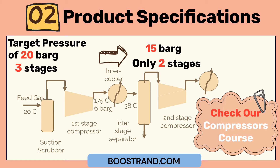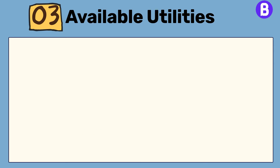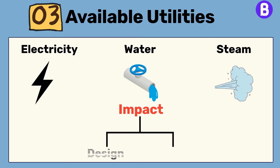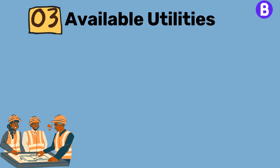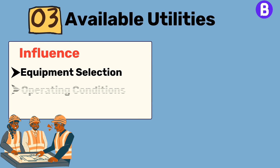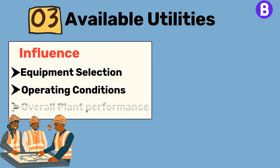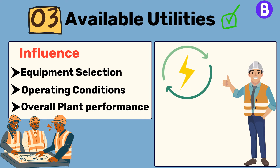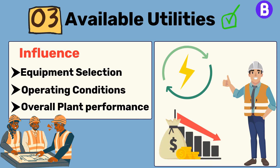In our compressors course, we talked about how discharge temperature affects the operation of a compressor. The availability and cost of utilities such as electricity, water, and steam can significantly impact the design and operation of the plant. Process engineers must consider these factors when developing the plant model, as they can influence the selection of equipment, operating conditions, and overall plant performance. By considering available utilities, process engineers can optimize the plant's energy consumption and minimize operating costs.